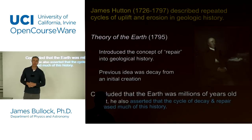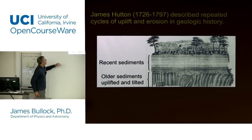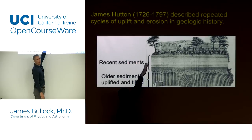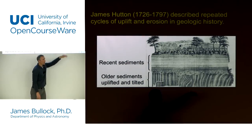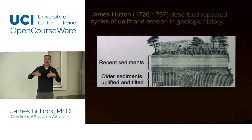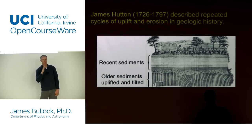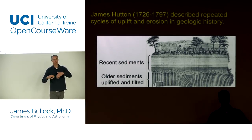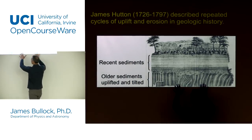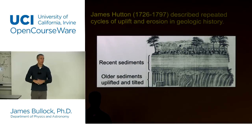Hutton asserted that the cycle of decay and repair erased much of the Earth's history, making it very hard to use geology to age-date the Earth. For example — and this is just a sketch — you have strata laid down over eons, but some catastrophic event in the past made sediments that were lying flat tilt up on their sides. Maybe there was an earthquake or mountains were growing. They didn't really understand tectonic shifting at the time, but the point was that things get kind of messed up, making it harder to simply tick off this history.